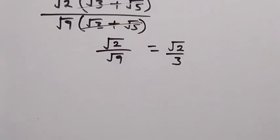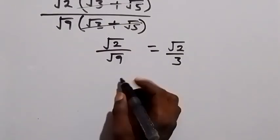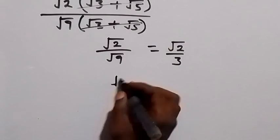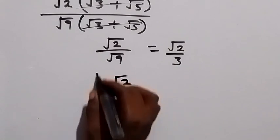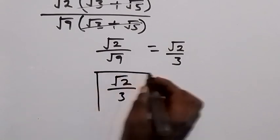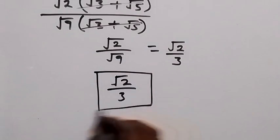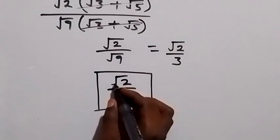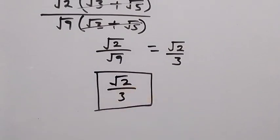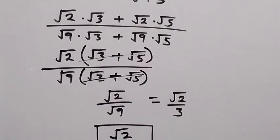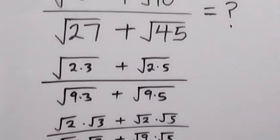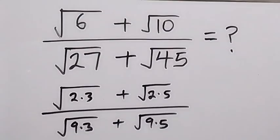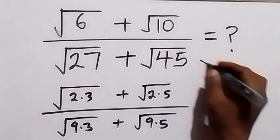Therefore, the simplified form of the expression is root 2 over 3. We can see that this expression can simply be written as root 2 divided by 3.